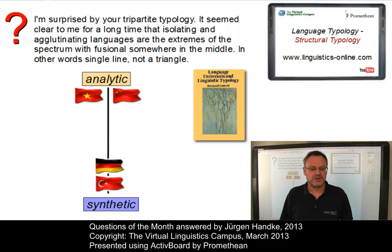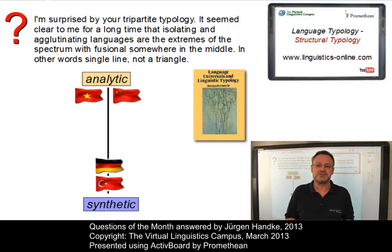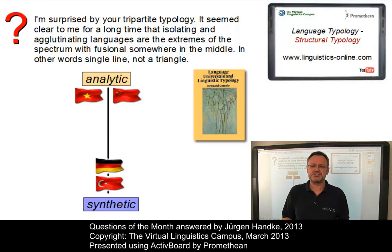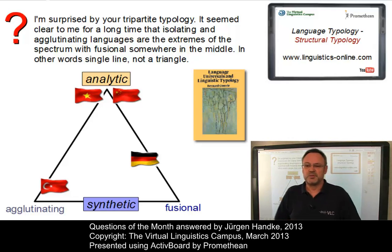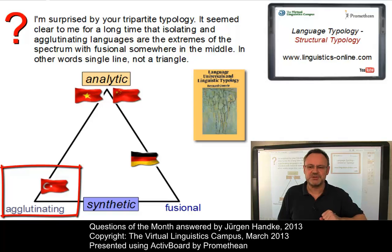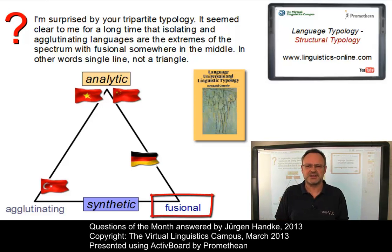The analytic versus synthetic axis is one dimension, but if we look at how languages like German and Turkish segment words into morphs, we find at least two types of synthetic languages: agglutinating and fusional. To combine both parameters we need a triangular representation. Analytic languages do not segment morphs at all. Among synthetic languages, agglutinating ones like Turkish show a high degree of segmentability with clear-cut boundaries between morphs, whereas in fusional languages like German the situation is less clear-cut.